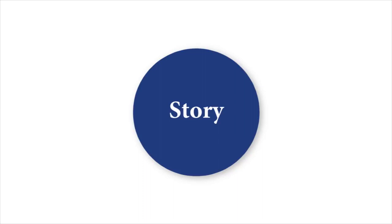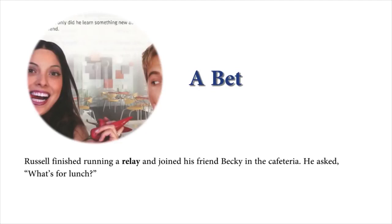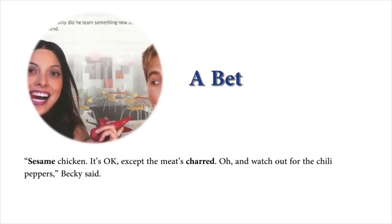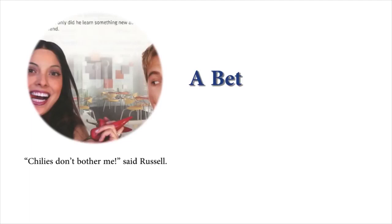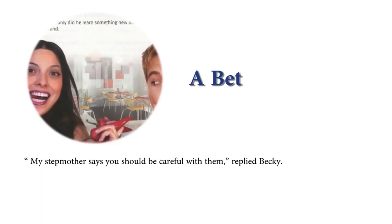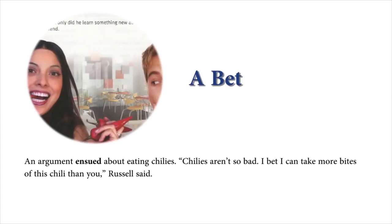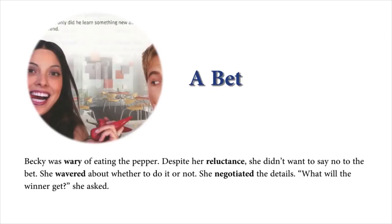A Bet. Russell finished running a relay and joined his friend Becky in the cafeteria. He asked, 'What's for lunch?' 'Sesame chicken. It's okay except the meat's charred. Oh, and watch out for the chili peppers,' Becky said. 'Chilis don't bother me,' said Russell. 'My stepmother says you should be careful with them,' replied Becky. An argument ensued about eating chilis. 'I bet I can take more bites of this chili than you,' Russell said. Becky was wary of eating the pepper. Despite her reluctance, she didn't want to say no to the bet. She wavered about whether to do it or not.